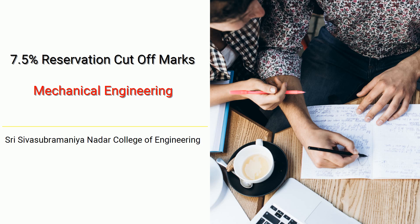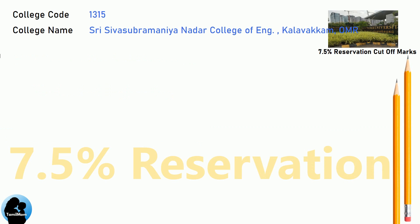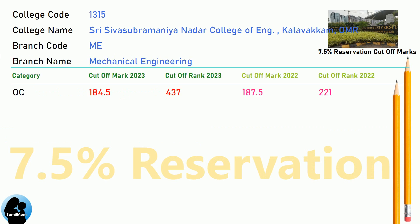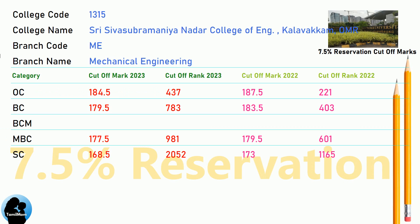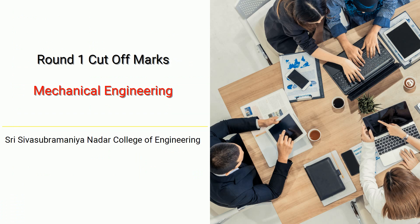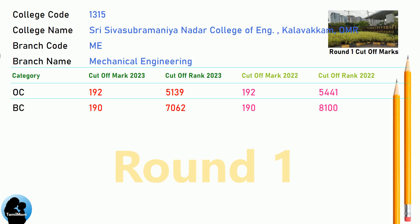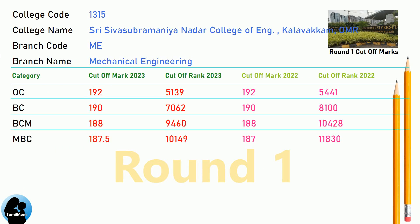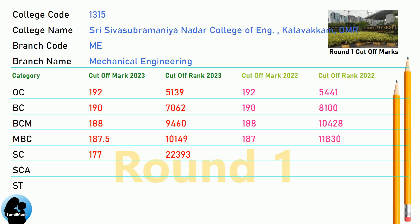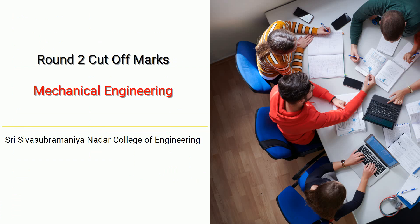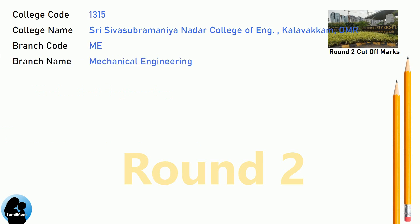DNA 7.5 Reservation Cut-Off for Shri Ifsubramania Nadar College of Engineering in Mechanical Engineering. DNA Round 1 Cut-Off for Shri Ifsubramania Nadar College of Engineering in Mechanical Engineering. DNA Round 2 Cut-Off for Shri Ifsubramania Nadar College of Engineering in Mechanical Engineering.